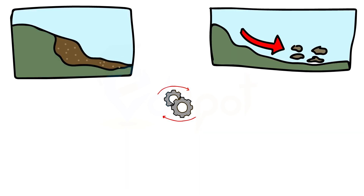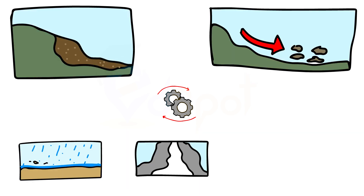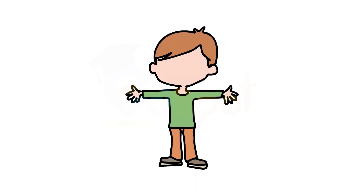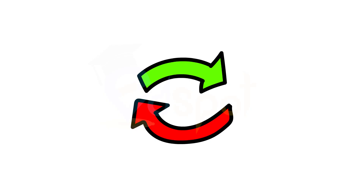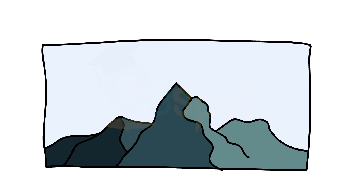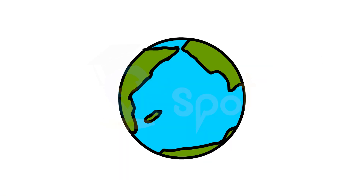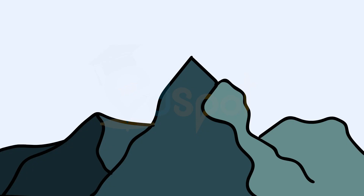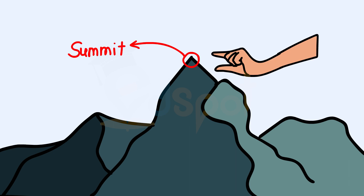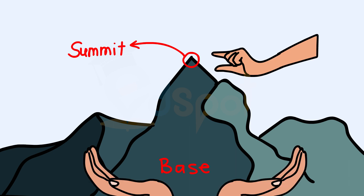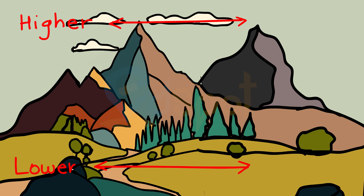These two processes are carried out by running water, ice, and wind. Broadly, we can group different landforms depending on elevation and slope into mountains, plateaus, and plains. A mountain is any natural elevation of the earth's surface. The mountains may have a small summit and a broad base, and are considerably higher than the surrounding area. Some mountains are even higher than the clouds.